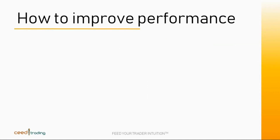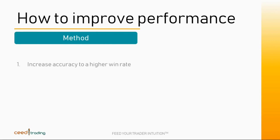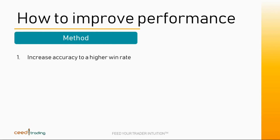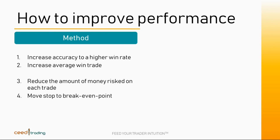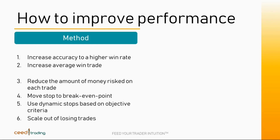How can we improve strategy performance? As we go through the list of available methods, think about whether or not each method is under the trader's immediate control. To increase strategy performance, we could increase the accuracy to a higher win rate, increase the average win trade, reduce the amount of money risked on each trade, move the stop to break even, use dynamic stops based on objective criteria, or scale out of losing trades.